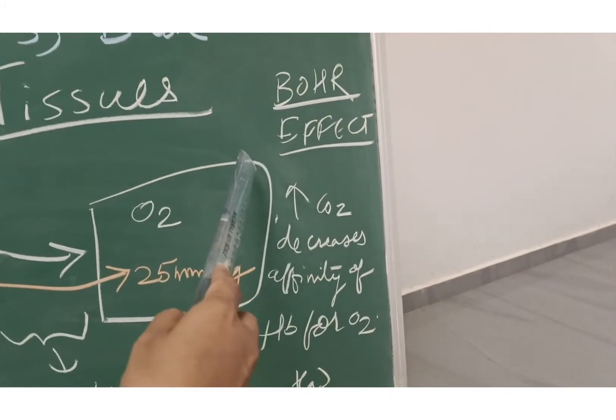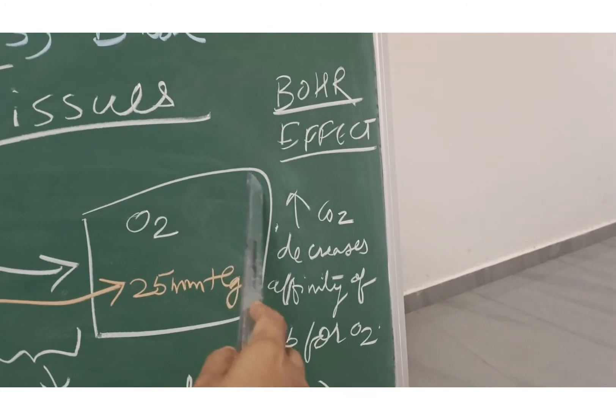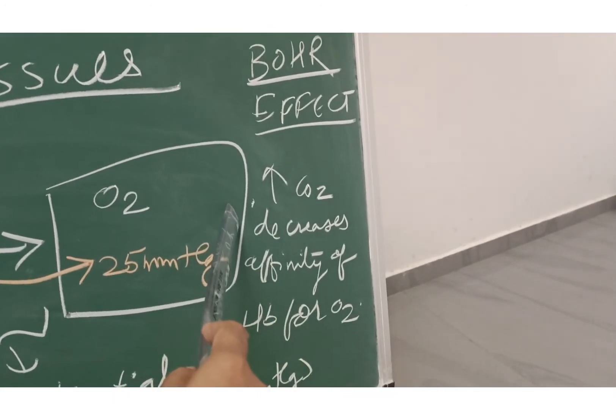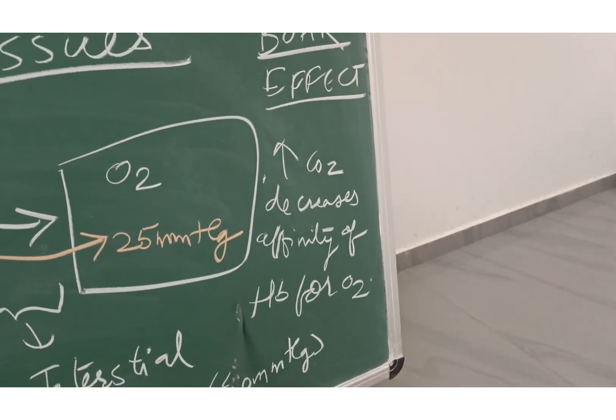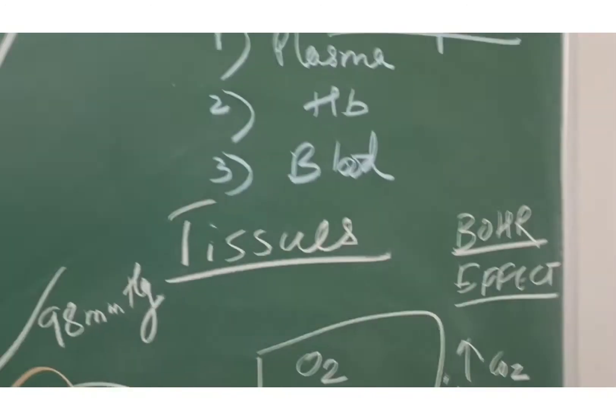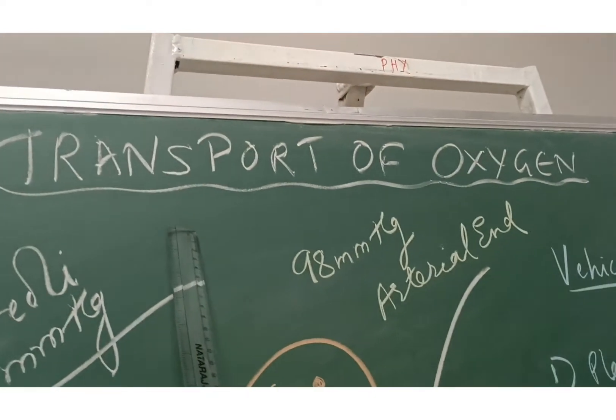One important thing you have to learn here is the Bohr effect. What does it say? It says increased carbon dioxide decreases the affinity of hemoglobin for oxygen. This phenomenon is very important when we are considering the transport of oxygen.